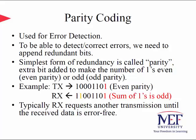Finally, let's touch upon parity coding for error detection in binary sequences. If you want to detect and correct errors, you need to add some redundant information. The simplest form of this redundancy is a parity bit added to make the number of ones even or odd. For example, transmitting one-zero-zero-one-one-zero-one where the last bit is the computed parity using even parity — if one bit is flipped due to transmission error, you can easily detect it because the number of ones in the received word will be odd. Think about whether this code can detect multiple errors. To get the correct information, the receiver requests another transmission until the received data is error free.